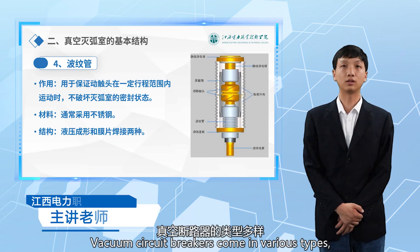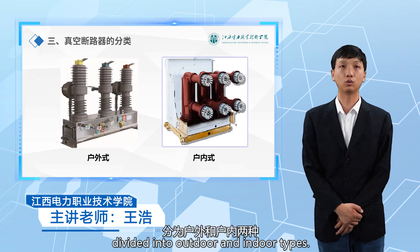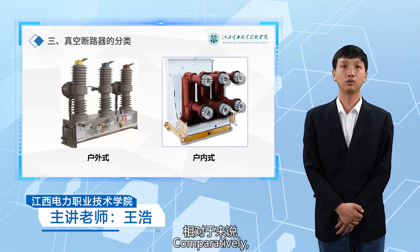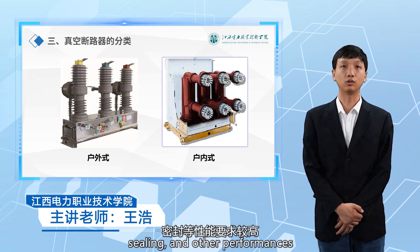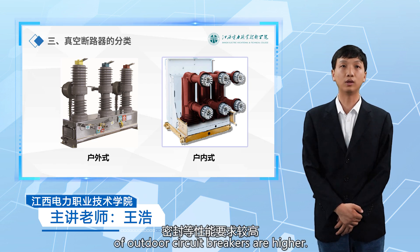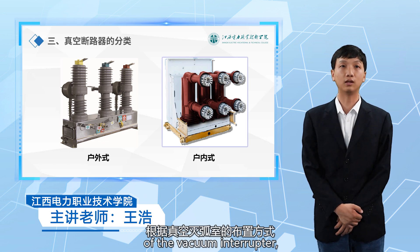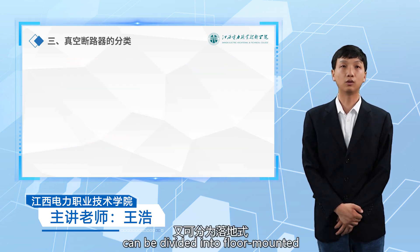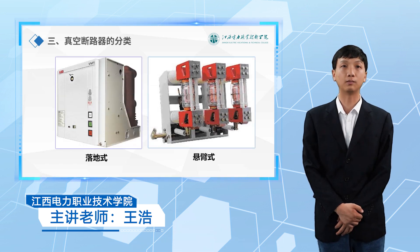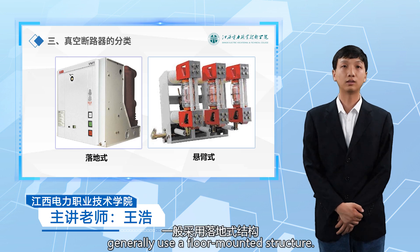Vacuum circuit breakers come in various types, divided into outdoor and indoor types. Comparatively, the requirements for external insulation, sealing, and other performances of outdoor circuit breakers are higher. According to the arrangement of the vacuum interrupter, vacuum circuit breakers can be divided into floor-mounted and cantilever types. Outdoor vacuum circuit breakers generally use a floor-mounted structure.